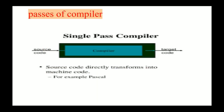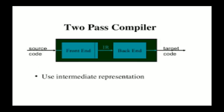In the case of passes, consider a single-pass compiler: the source program gets directly converted into the target program. When talking about a two-pass compiler, the source program is first converted into an intermediate code.